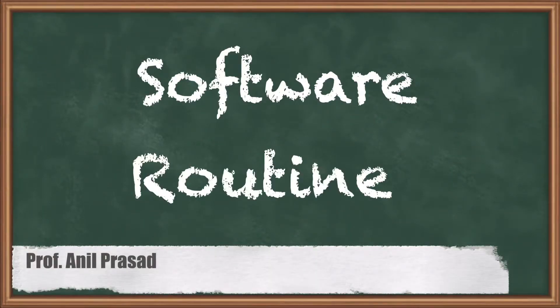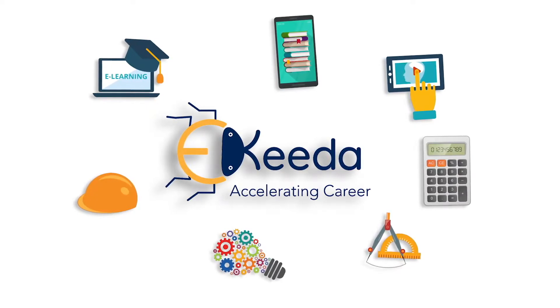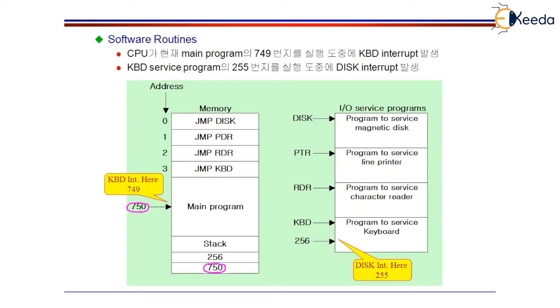Hello everyone! In this session, let us understand about software routines or the interrupt service routines, which are going to get executed when an interrupt is triggered. Let us say a keyboard interrupts the CPU. When the keyboard interrupts the CPU, the CPU should be able to execute the keyboard's interrupt service routine.